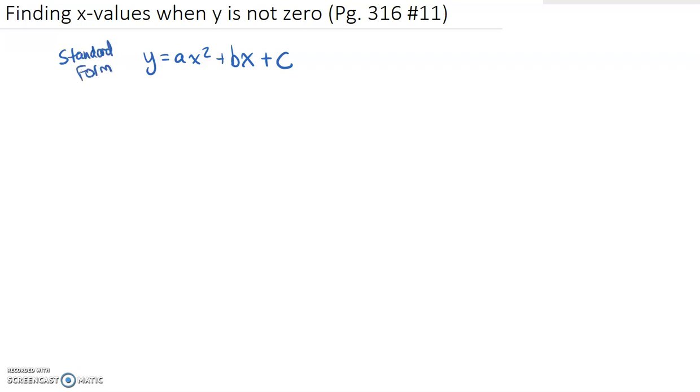And normally, if we're trying to find the zeros—another way to call those zeros is the x-intercept—we would set y equal to 0, and then solve for x.